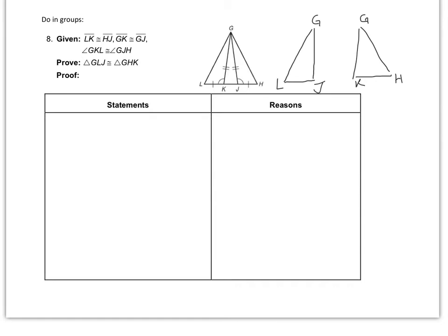Before I even start the proof, let's look at what we know. We know that GK is congruent to GJ. So triangle GKL is congruent to triangle GJH by side angle side. And we've learned that if these two triangles are congruent, then corresponding parts — GL would be congruent to GH. That's called corresponding parts, and I'm going to use that in my proof.